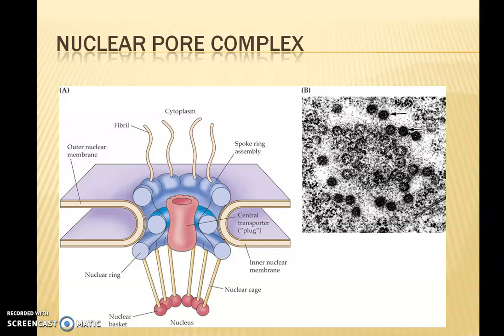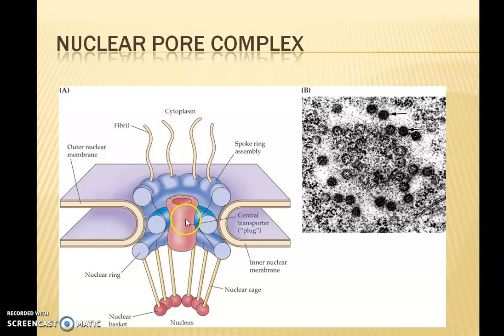The central hole or pore of the pore complex has water channels through which water-soluble molecules are transported between the nucleus and the cytoplasm. This is the hole through which water-soluble molecules are transported. This hole is often plugged by a central plug.